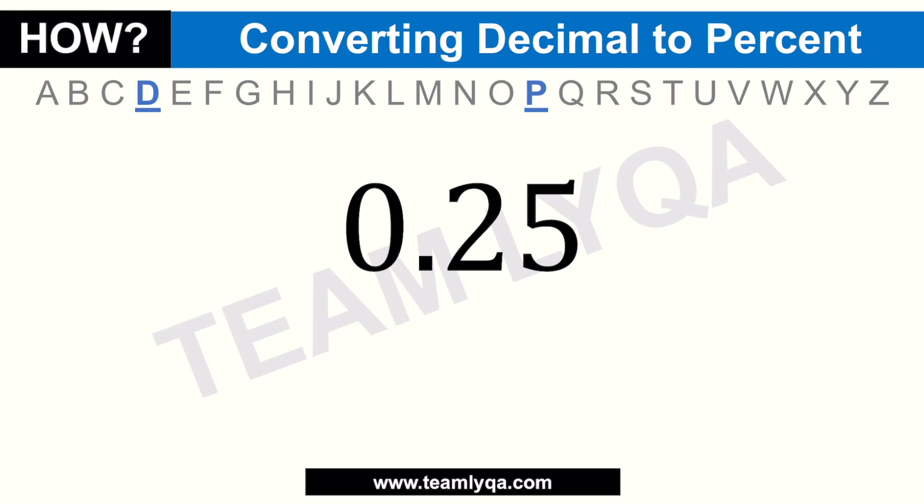If you have a decimal and you want to make it a percent, one of the things that confuses many people is which direction to move the decimal. When you're converting a decimal to percent, the movement is from left to right — you're going to move the decimal place two times from left to right.